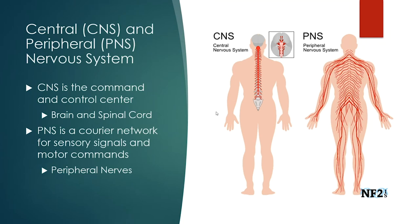The nervous system is divided into the central nervous system and the peripheral nervous system. Just know that the peripheral nervous system is the information collector — it goes out and reaches sensory systems, picking up signals. The central nervous system is the control center — it brings information in and sends motor commands out. Brain and spinal cord make up the central nervous system; peripheral nerves make up the peripheral nervous system.